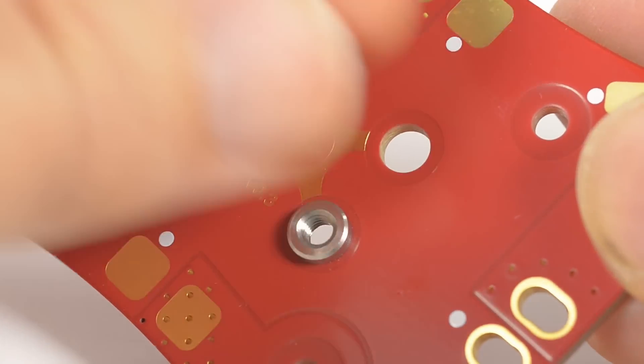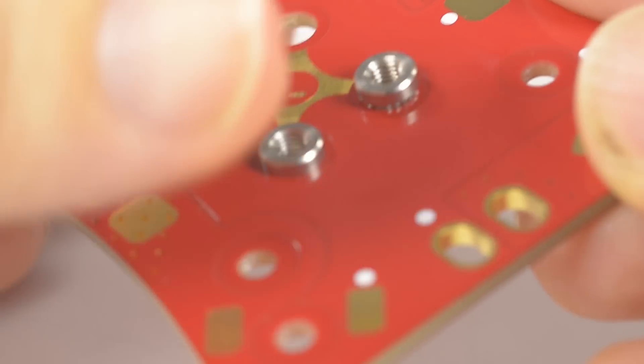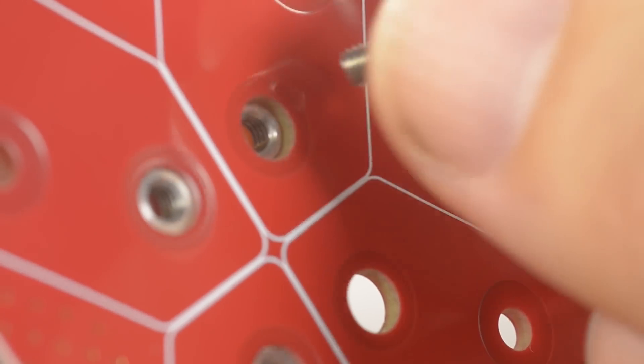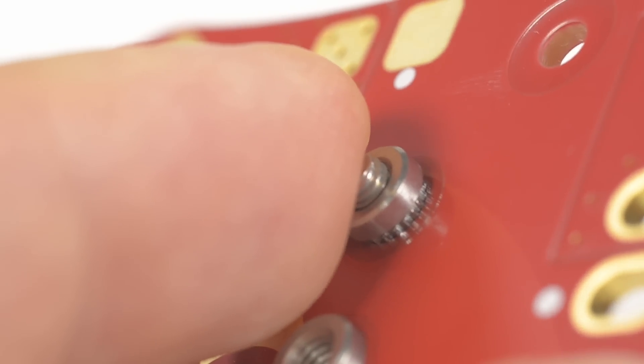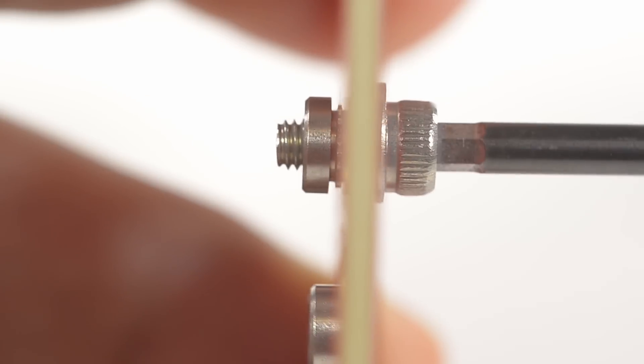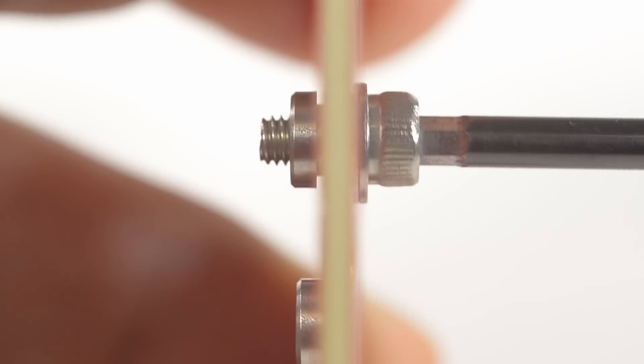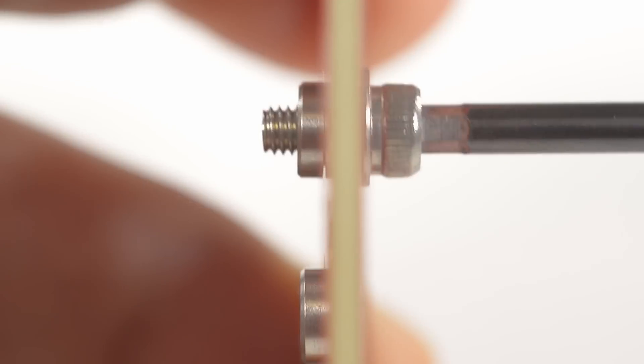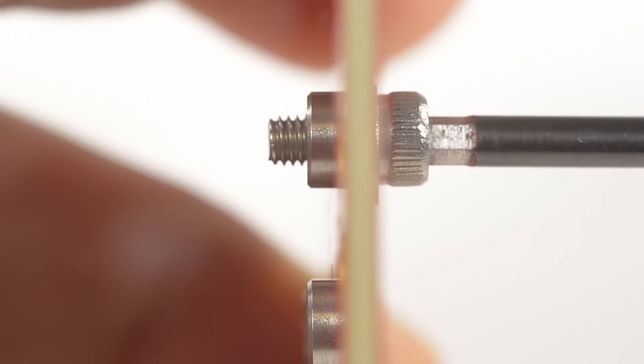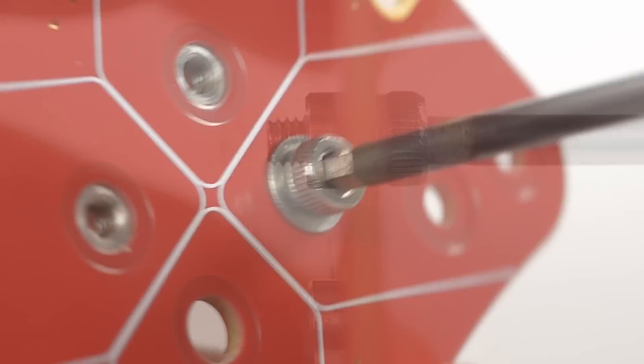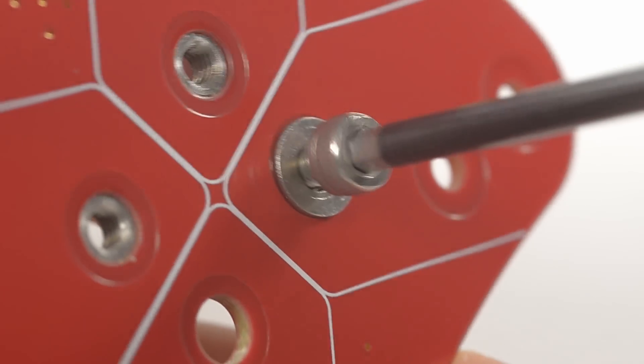Put the press nut into the top of the PDB. Insert the screw and washer to the bottom. Start tightening the screw while holding the press nut to the PDB and then tighten until the press nut seats all the way into the PDB. Remove the screw and repeat for all four.